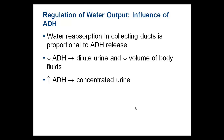Antidiuretic hormone is produced by the hypothalamus and stored in the posterior pituitary. In its presence, you produce concentrated urine because ADH — also known as vasopressin — binds to receptors in the collecting duct and distal convoluted tubule. It repositions aquaporins into the membrane, allowing more water retention. This is needed in dehydration, fasting, desert conditions, or hypovolemic shock.